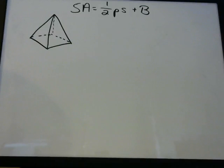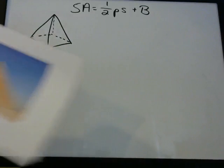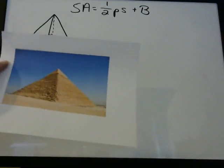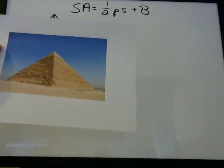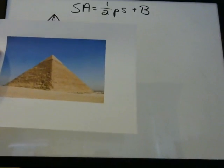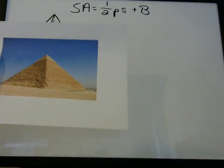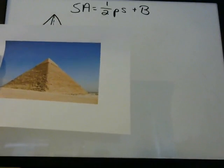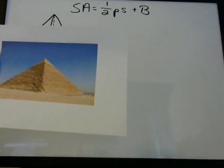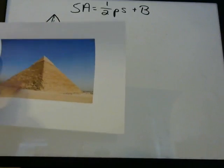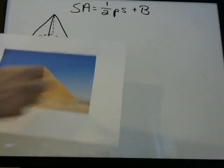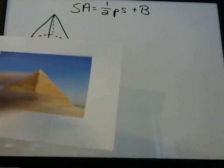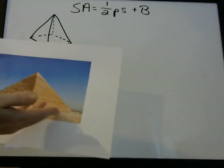When we're talking about a pyramid — most of us are familiar with the pyramids in Egypt, and that's exactly what we're talking about here. When you think about surface area, you can think about essentially painting all of the sides of the pyramid and the bottom.